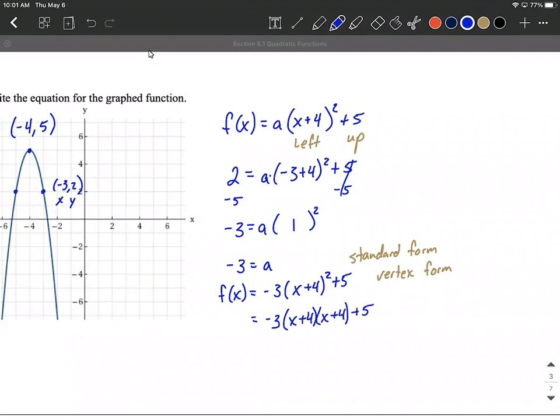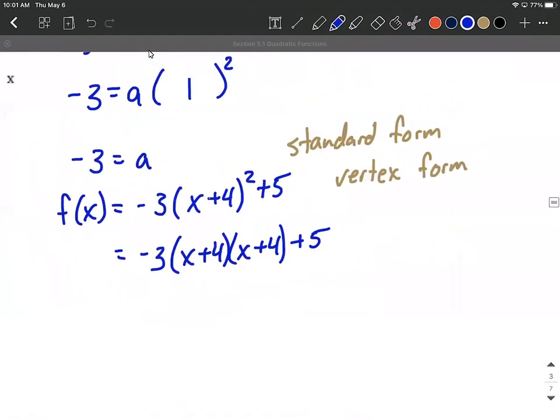I'm going to first bring the -3 along and distribute here. So I'm going to do first, outer, inner, and last: x² + 4x + 4x + 16. Bring that +5 down from the outside.